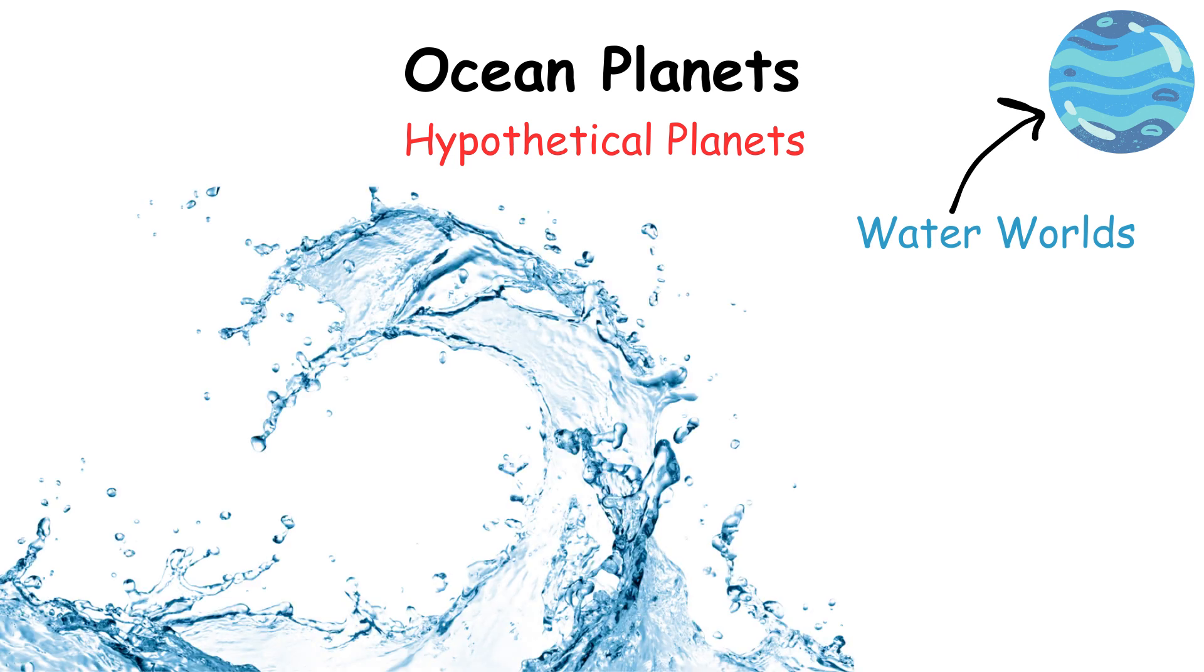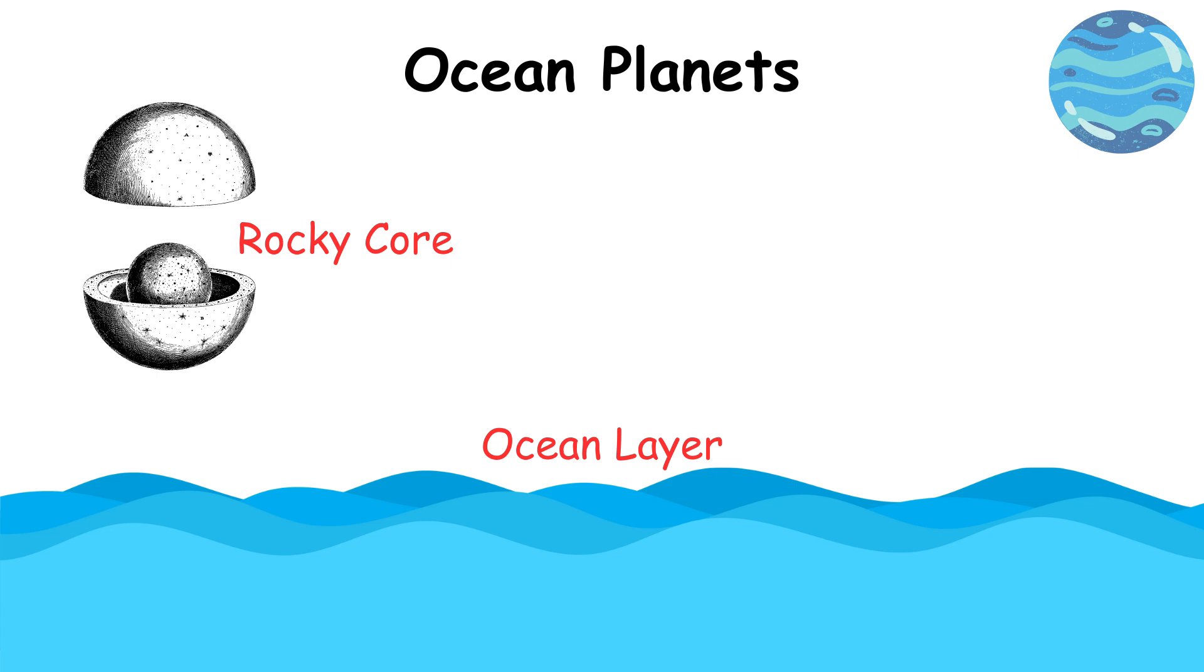Ocean planets, also known as water worlds, are hypothetical planets covered entirely or almost entirely by water. They may have a rocky core surrounded by a deep ocean layer, possibly with a thick atmosphere.